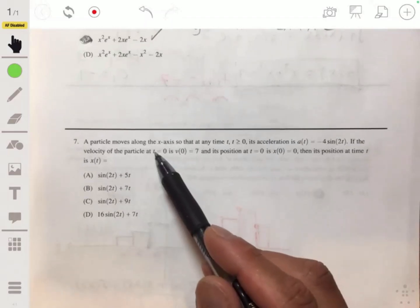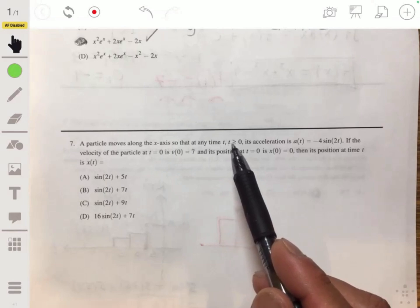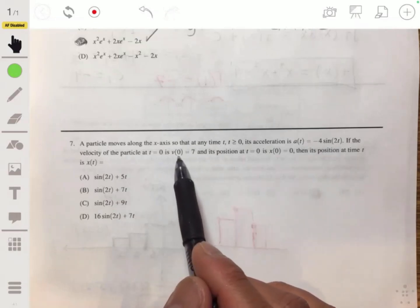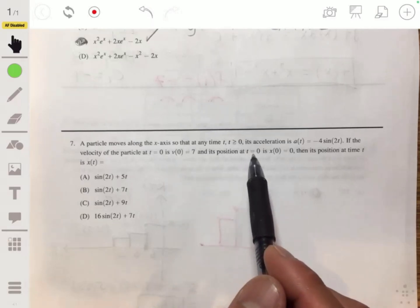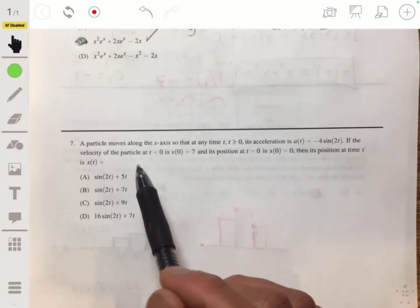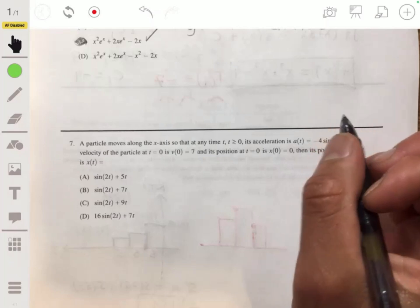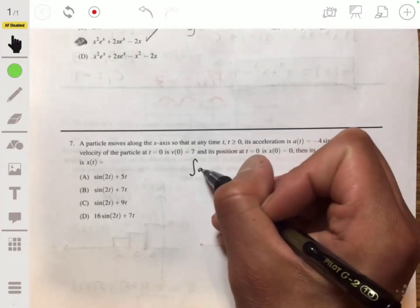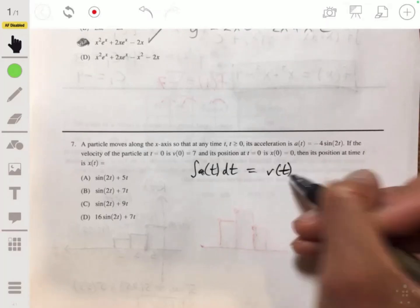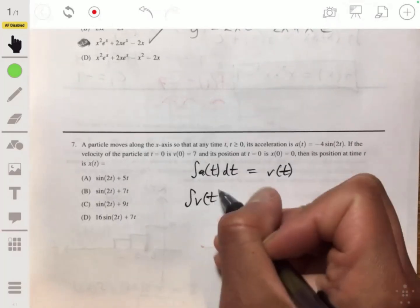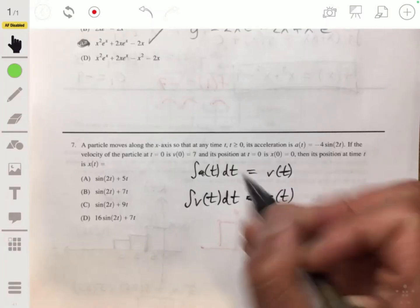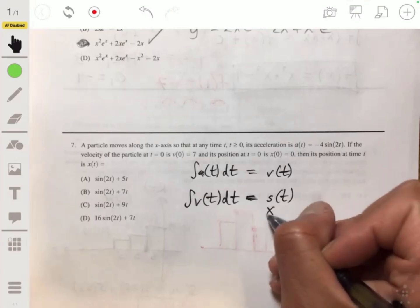Problem seven, a particle moves along the x-axis so that at any time t, the acceleration a(t) is -4sin(2t). If the velocity of the particle at t=0 is v(0)=7, and its position at t=0 is x(0)=0, then its position at time t is x(t) equals. Okay, so it could sound overwhelming, but we just have to remember the integral. When we integrate acceleration, we're gonna get velocity. And when we integrate velocity, we're gonna get position.